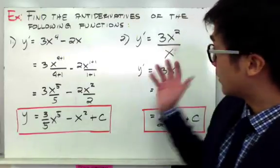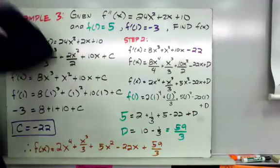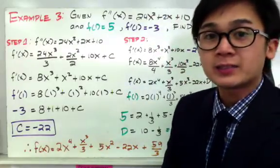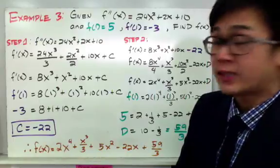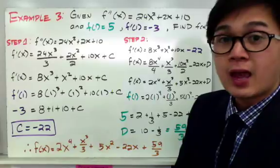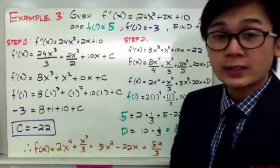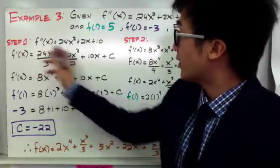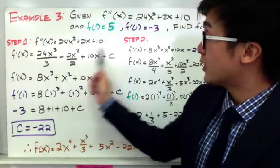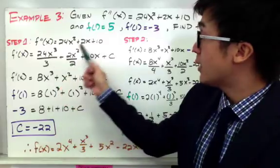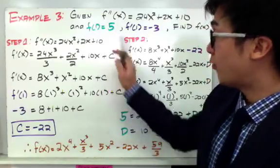Now let's take a more complex function and use the antiderivative rules. We are given the second derivative: f double prime of x equals 24x squared plus 2x plus 10, with f of 1 equal to 5 and f prime of 1 equal to negative 3. Our goal is to find the original function f of x. Since we are given the second derivative, we need to perform two antiderivatives to reach f of x. For step 1, finding f prime of x: the antiderivative gives us 24x cubed all over 3, plus the antiderivative of 2x which is 2x squared all over 2, plus the antiderivative of 10 which is 10x, and don't forget the constant C in your f prime of x.